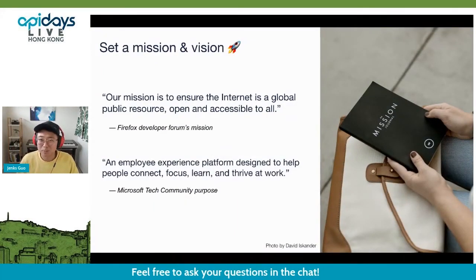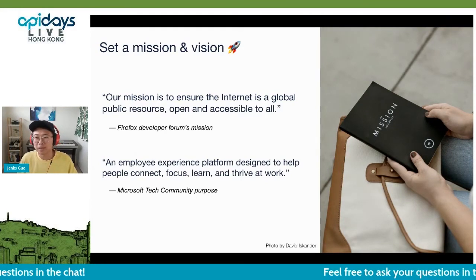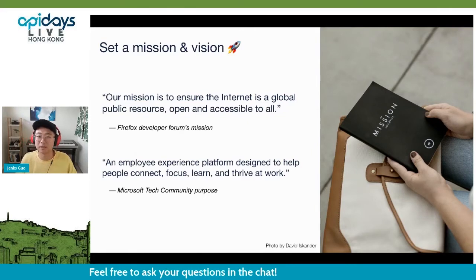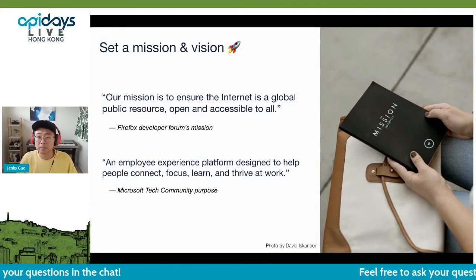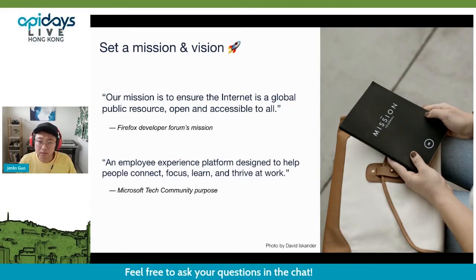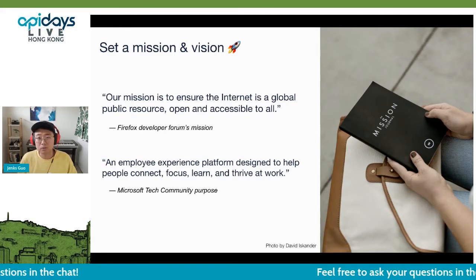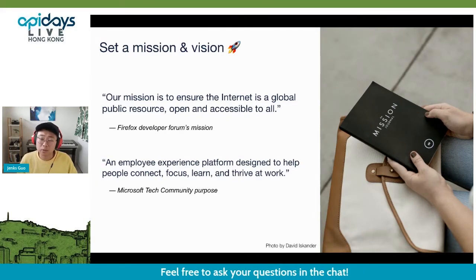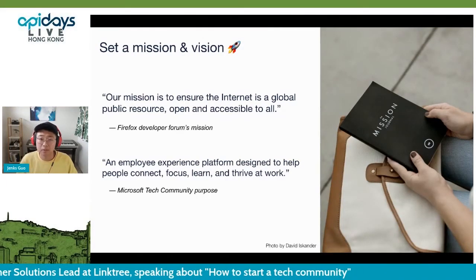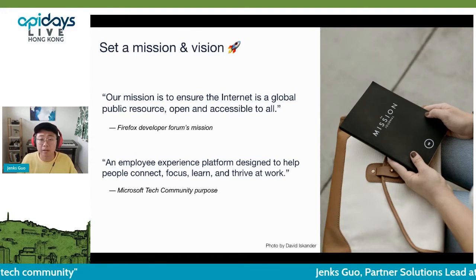One leadership principle is don't use a number for your company's vision or mission, such as reaching X billions of users by 2030. Employees don't want to work for a number — they want to work for a good cause beyond the numbers. Running a tech community is quite similar. Community members don't join because it looks pretty — they should be here for a good reason. The value proposition needs to be very clear, so set a mission and vision for your community and make sure everyone understands where you're going.